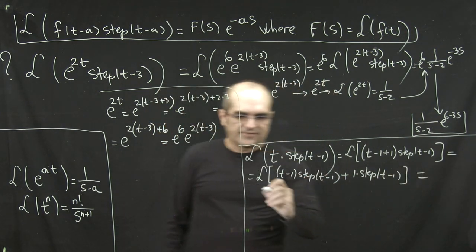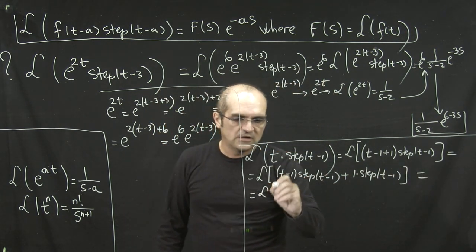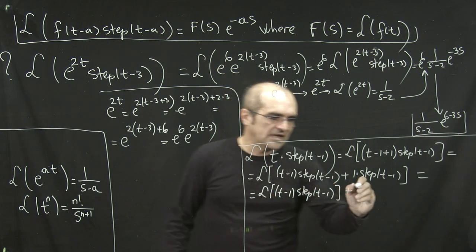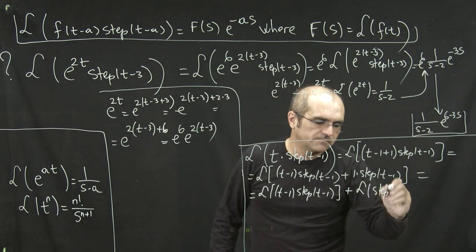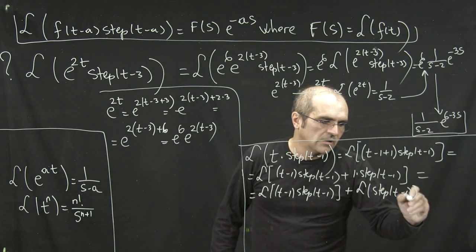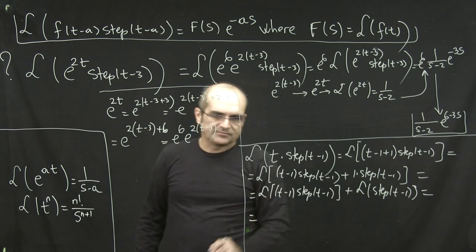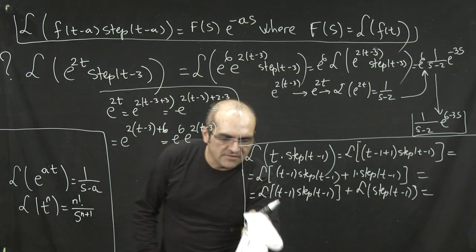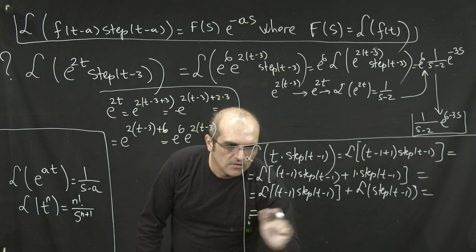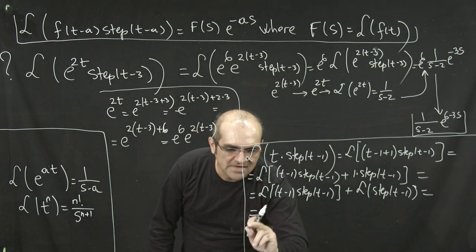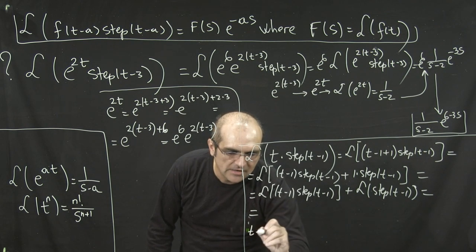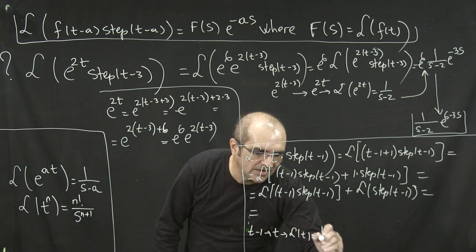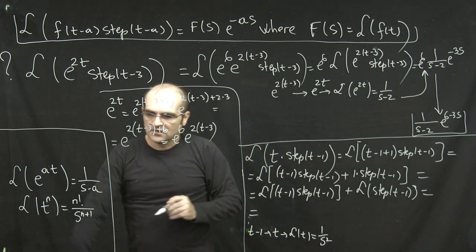So, linearity property first, L of (t minus 1)·step(t minus 1), plus L of step(t minus 1), then delay theorem for the first part. So again, let's do the process in our mind. So t minus 1 becomes t, you take the Laplace of that, which is 1 over s squared, according to this formula.